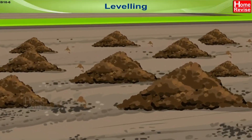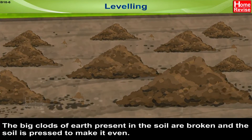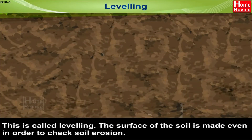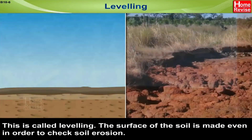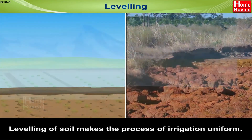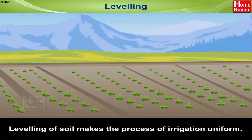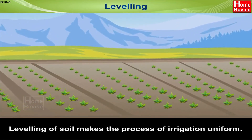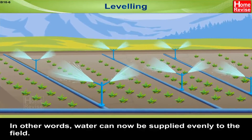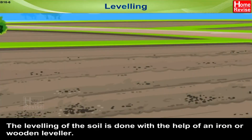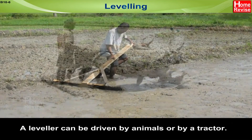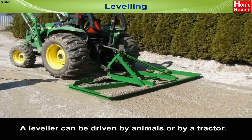Leveling. The big clods of earth in the soil are broken and the soil is pressed to make it even. The surface of the soil is made even in order to check soil erosion. Leveling also makes the process of irrigation uniform — water can be supplied evenly to the field. Leveling is done with the help of an iron or wooden leveler, which can be driven by animals or by a tractor.